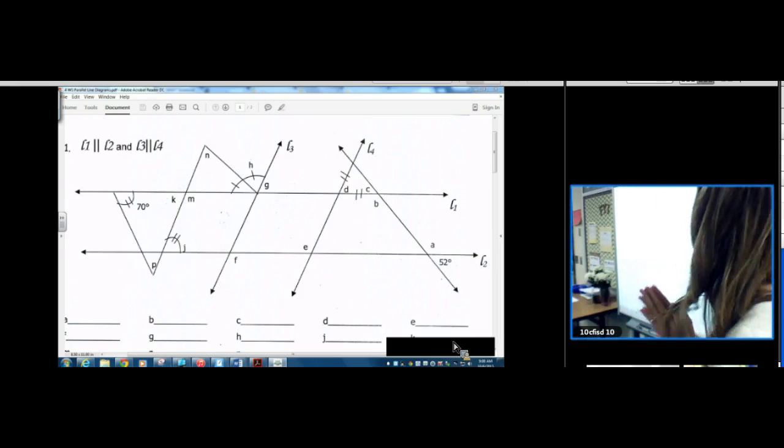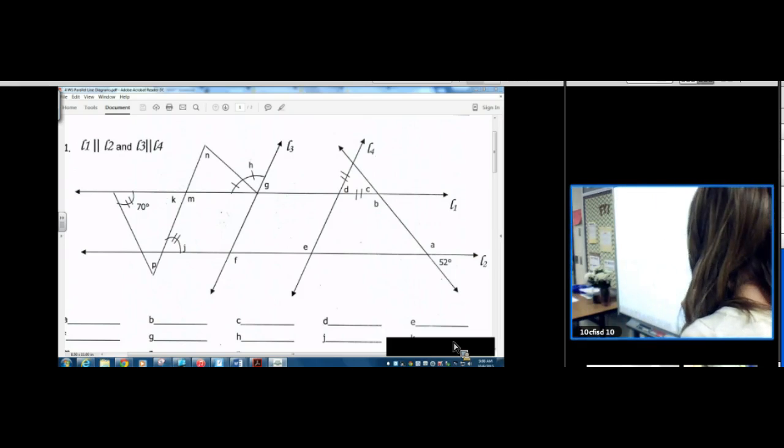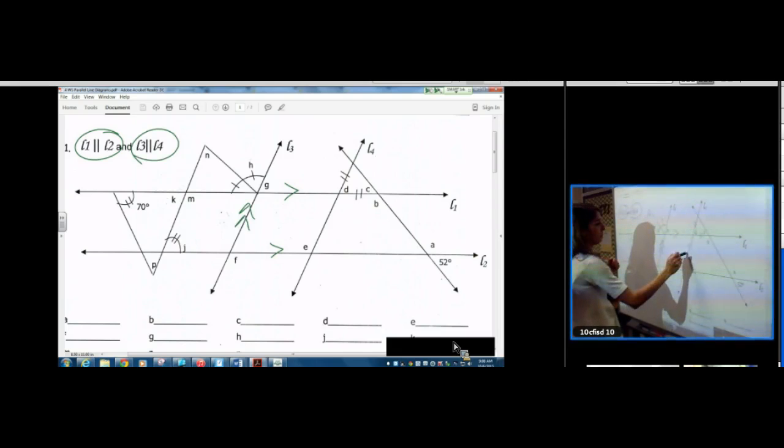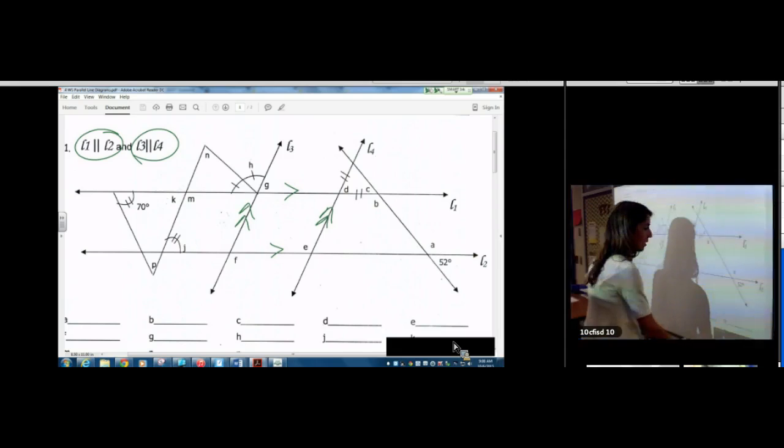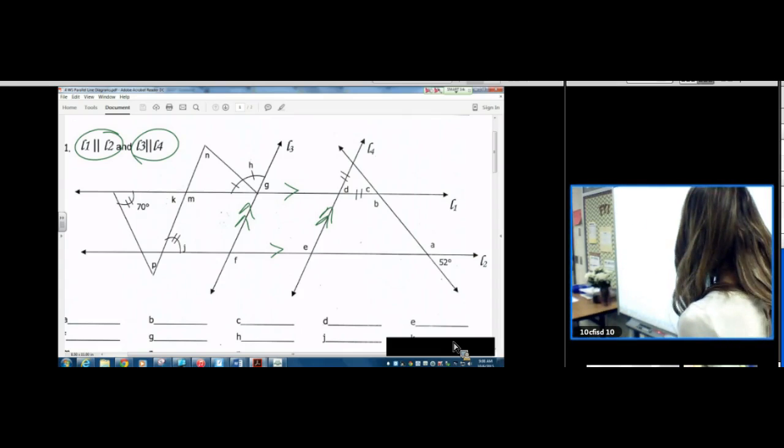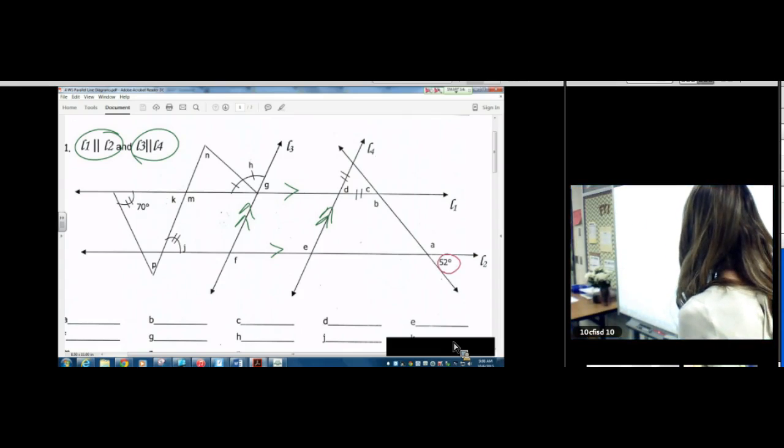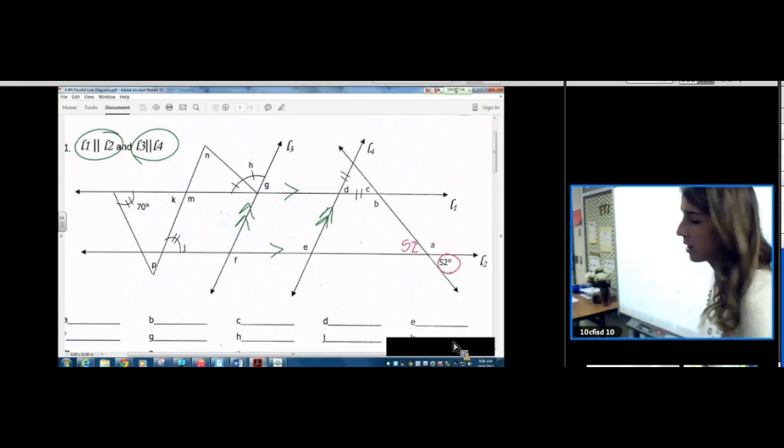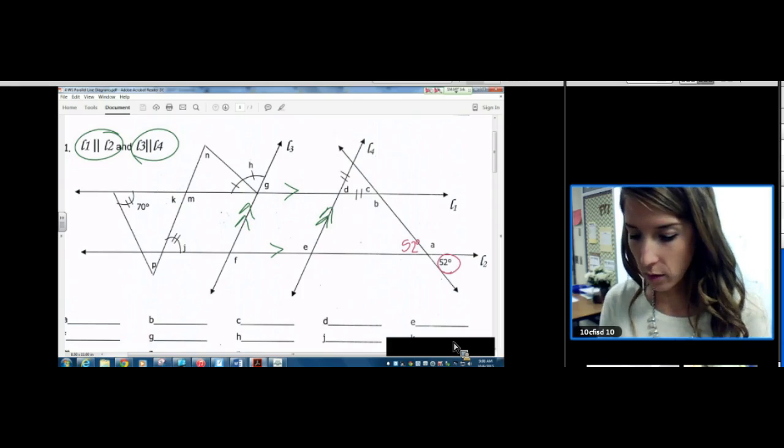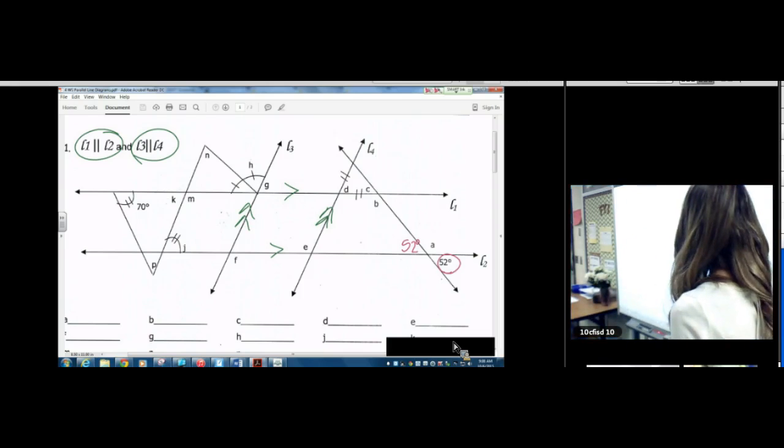So number one, we know that we have some parallel lines. So I'm going to go ahead and mark those lines parallel. These lines are parallel. Arrow arrow. And three and four are parallel. Double arrow, double arrow. So go ahead and just find a number somewhere on your diagram and start with that number. I could come over here and I could start with 52 if I wanted to. In a cluster of four, when you know one number, you know all four numbers. So you can use your vertical angles and you can use linear pair.